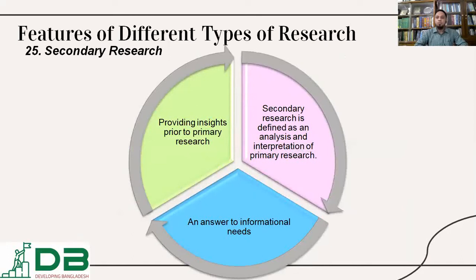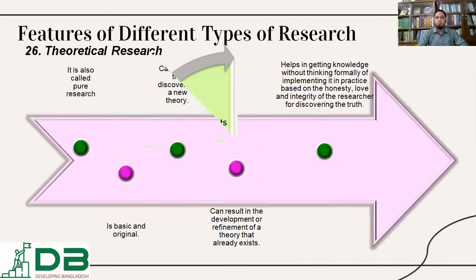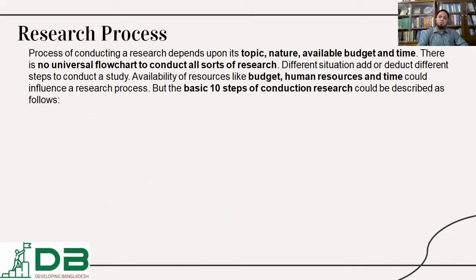Secondary research is set up mainly to explain the primary findings, providing insight to primary research. It is defined as an interpretation of primary research that answers informational needs. Theoretical research, also called pure research, is basic original research that can lead to discovery and the development of knowledge without thinking about formal implementation or practice. Theoretical research never considers the commercial viability of the outcome.